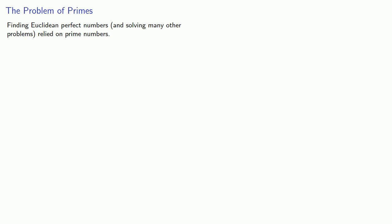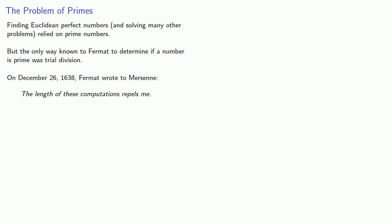Now, finding Euclidean perfect numbers, and in fact solving many other problems in number theory, relied on prime numbers. But the only way known to Fermat to determine if a number was prime was through trial division. And this is a tedious problem. In fact, on December 26, 1638, Fermat wrote to Mersenne, 'The length of these computations repels me.'